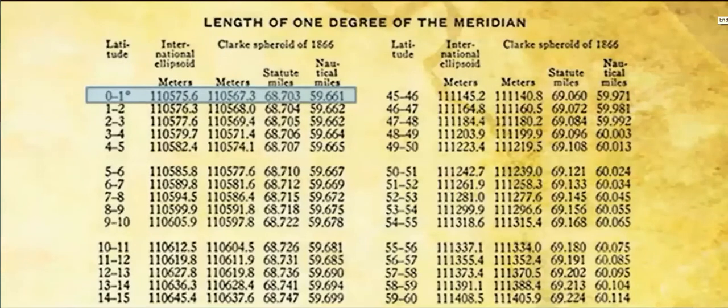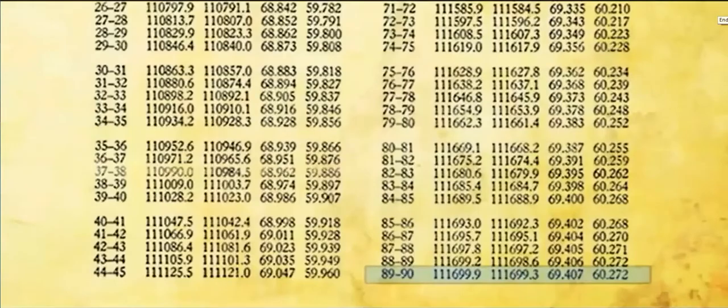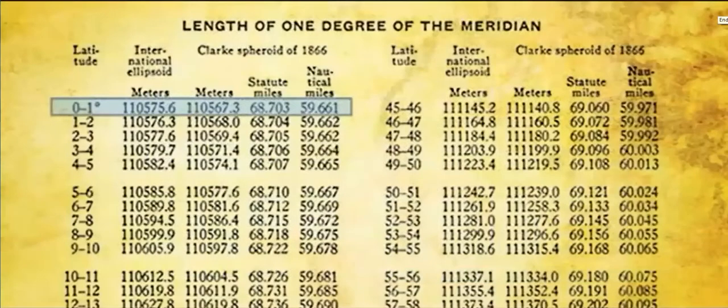This is taken out of the Smithsonian meteorological tables. You'll notice latitude zero degrees, and you go through up to 90 degrees. In the statute miles right there, this says length of one degree of the meridian. This is the line from equator up to the North Pole. If you look at the first number, let's see if we can zoom in a little here.